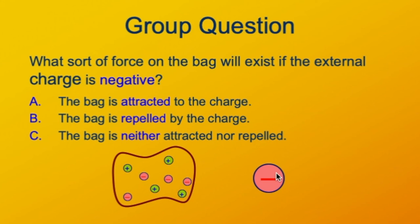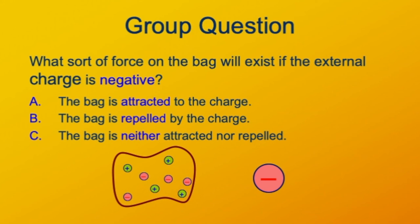What if the external charge were negative instead of positive? It would attract the positive charges and repel the negative charges in the bag — setting up the opposite polarization. But the end result is the same: the bag is attracted to the negative charge as well, because the attracted charges in the bag are closer than the repelled charges.